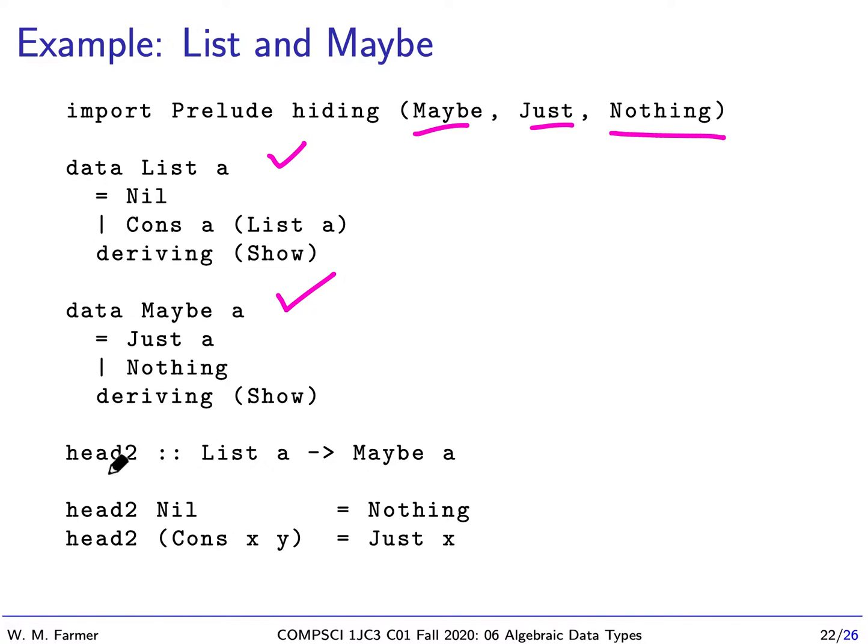And now I'm going to define head. Now remember, head will take a list and normally give back A, but this time I'm going to give back maybe A. And it's defined by pattern matching. Let's do this one first. The head of cons x, y is just going to be just x. But head of nil is nothing, because an empty list does not have a head. So in this case, we're going to return nothing because it's undefined. We're going to return just x in the other case because it is defined with the value of x.